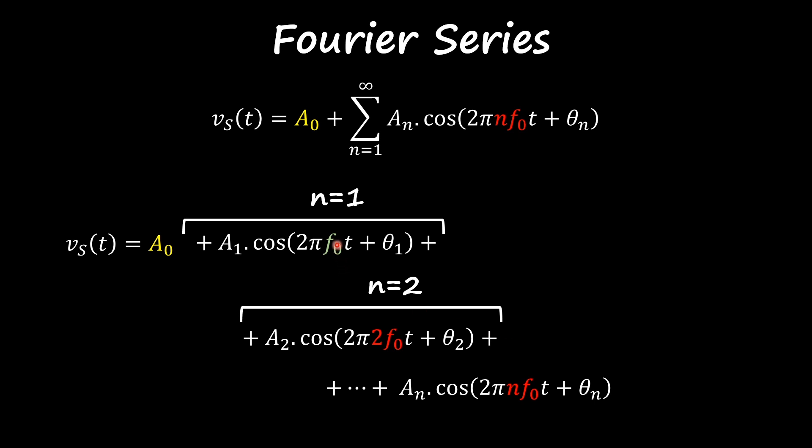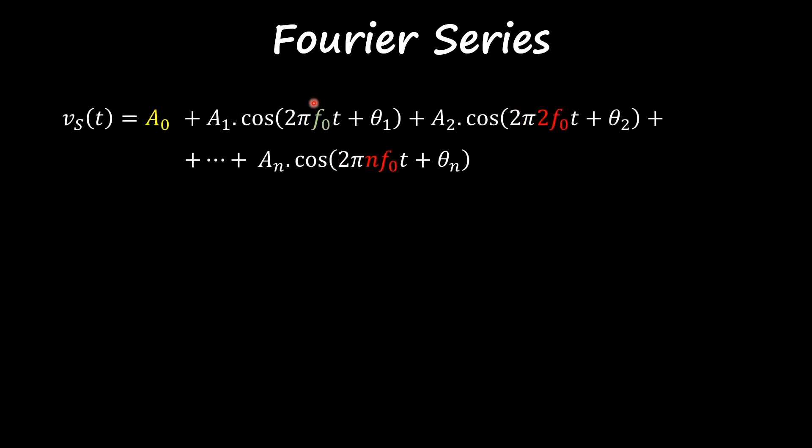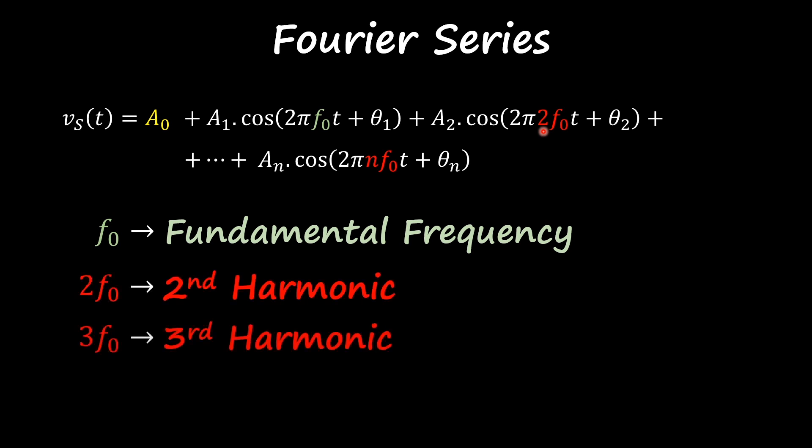Notice that I'm color coding here the frequencies that are inside of this cosine. The reason why I'm doing that is because this frequency here, the first one when n equals 1, it's called the fundamental frequency. It's the frequency with most weight out of your Fourier series. All the other ones are called harmonics and you have the second harmonic, the third harmonic, the nth harmonic, so forth and so on. So your signal has a fundamental frequency plus a set of harmonics.